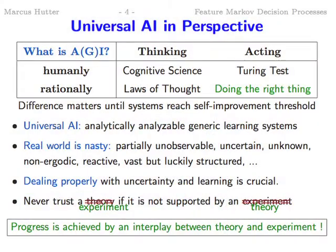I edited this slide yesterday after the discussions here. It makes sense to first put yourself in a corner. We had discussions and fights about what AGI is — some people work on systems which think, others on systems which act, others want to mimic humans, others rationality. For instance, the Turing test is about how to act humanly, and cognitive science about how to think humanly. I'm in the right bottom corner: I want to build systems which act rationally.